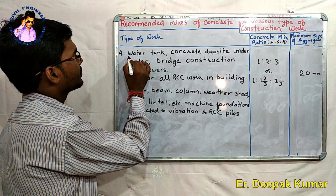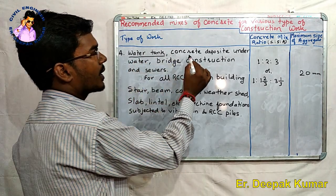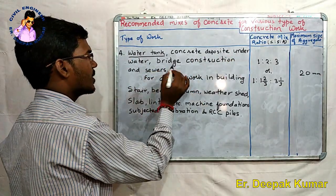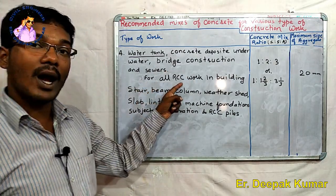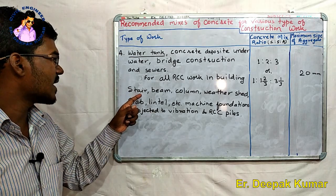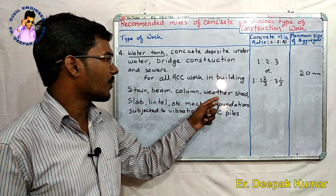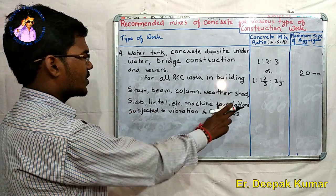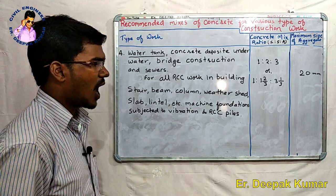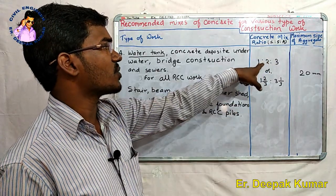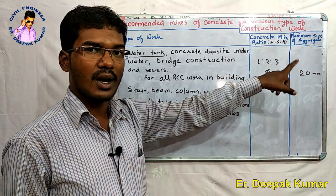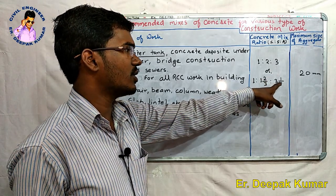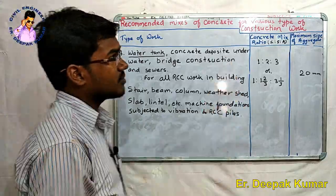The fourth type includes water tanks, concrete deposited under water, bridge construction, sewage work, and all general RCC work in buildings such as stairs, beams, columns, weather sheds, slabs, lintels, machine foundations subject to vibration, and RCC piles. The concrete mix ratio is 1:2:3 or 1:1⅔:3⅓, and the maximum size of aggregate is 20mm.